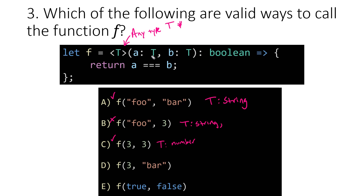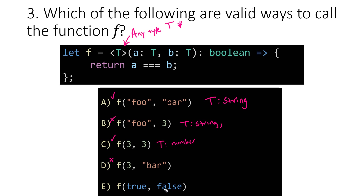We're starting to see that the first and second parameters both need to be the exact same type — which makes sense given the implementation, since we're asking if one value equals the other. We can quickly rule out option D since T would need to be number for a but that wouldn't work for b. And lastly, with two boolean values T's type would be boolean, which works out for both parameters.